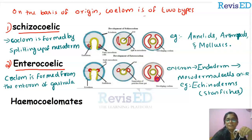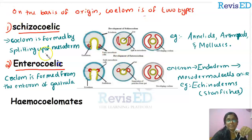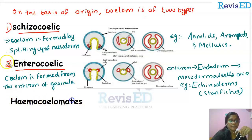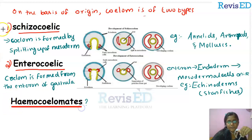To summarize: on the basis of origin, coelom is of two types — schizocoelic, where the coelom is formed by the splitting up of mesoderm, and enterocoelic, where the coelom is formed from the enteron of the gastrula.